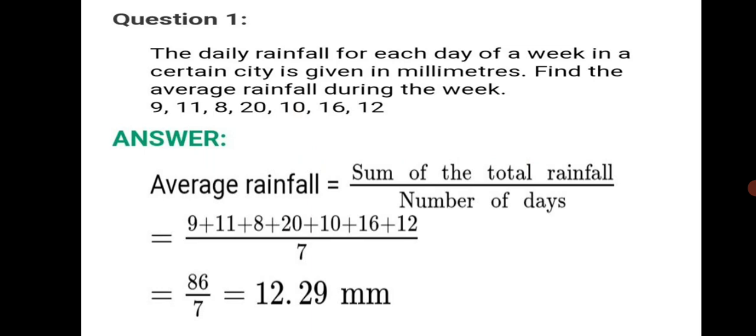The daily rainfall for each day of a week in a certain city is given in millimeters. Find the average rainfall during the week: 9, 11, 8, 20, 10, 16, 12. They are all the amount of rainfall in a city in millimeters. The units are the same. So let's write the answer. Average rainfall, because it is asked find the average rainfall.